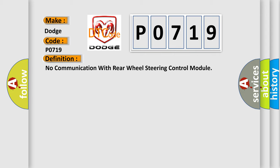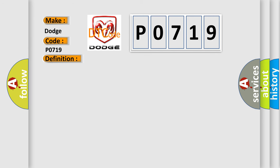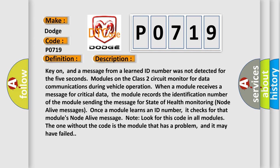Here is a short description of this DTC code. Key on, and a message from a learned ID number was not detected for 5 seconds on the Class 2 circuit, which monitors data communications during vehicle operation. When a module receives a message for critical data, it records the identification number of the sending module for state-of-health monitoring via node alive messages. Once a module learns an ID number, it checks for that module's node alive message. Look for this code in all modules — the one without the code is the module that has a problem and may have failed.